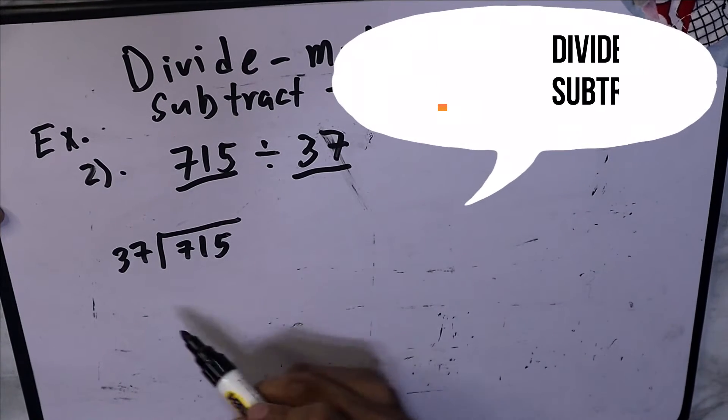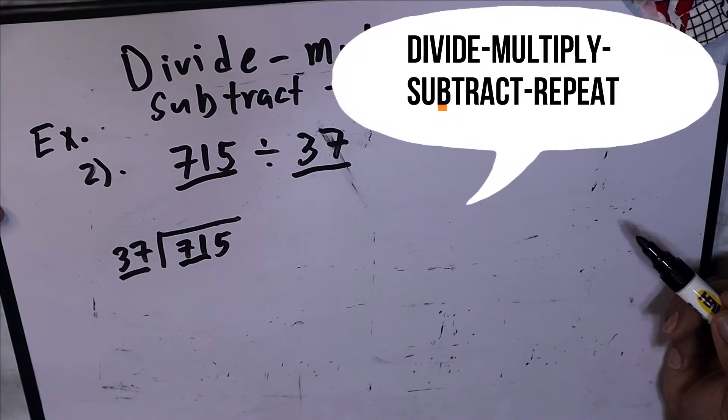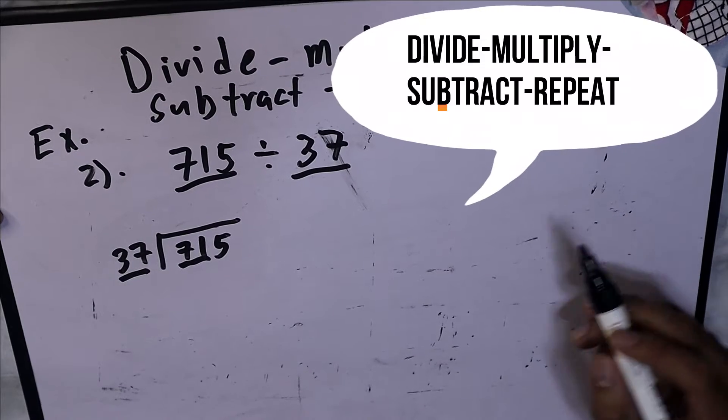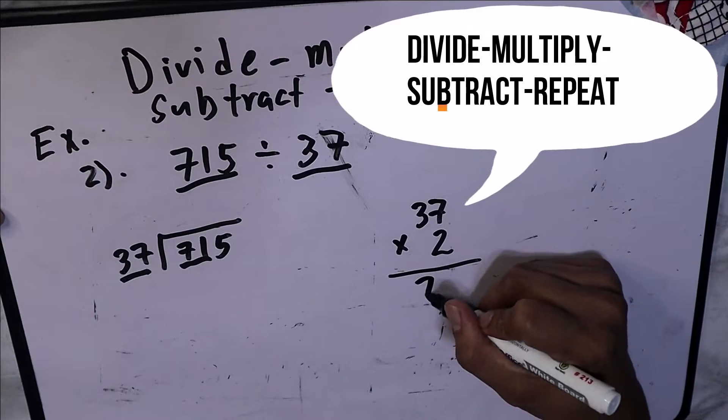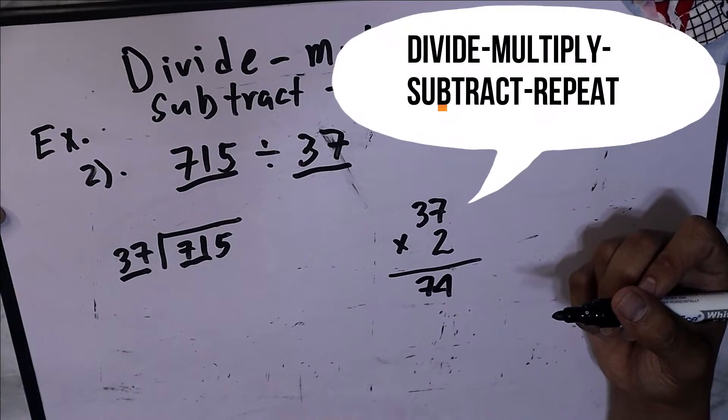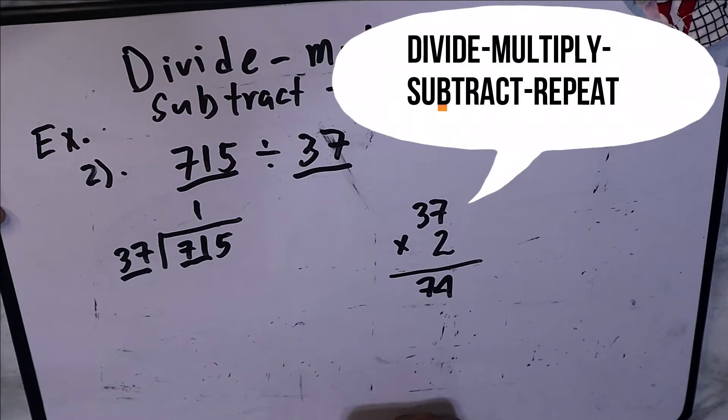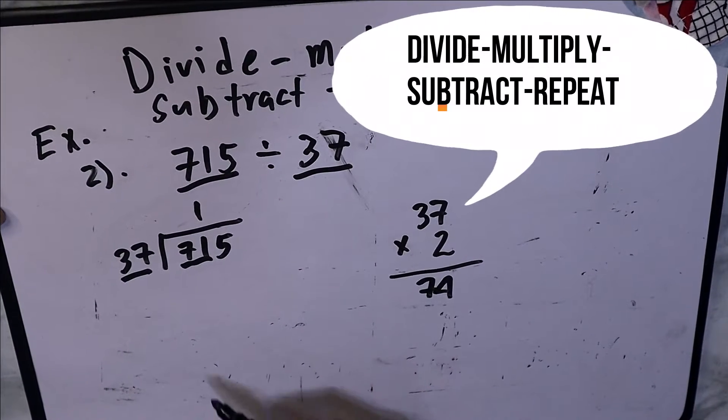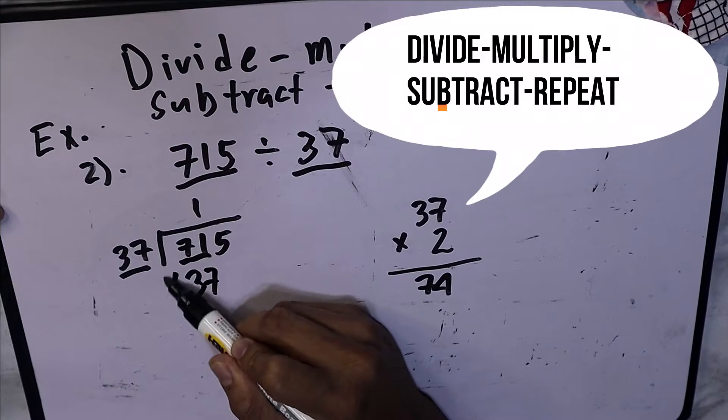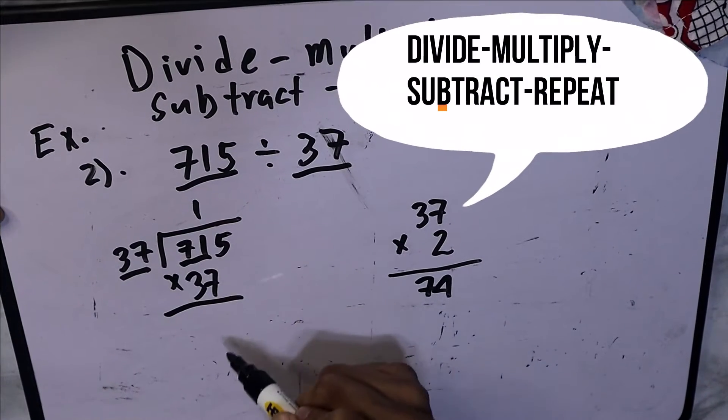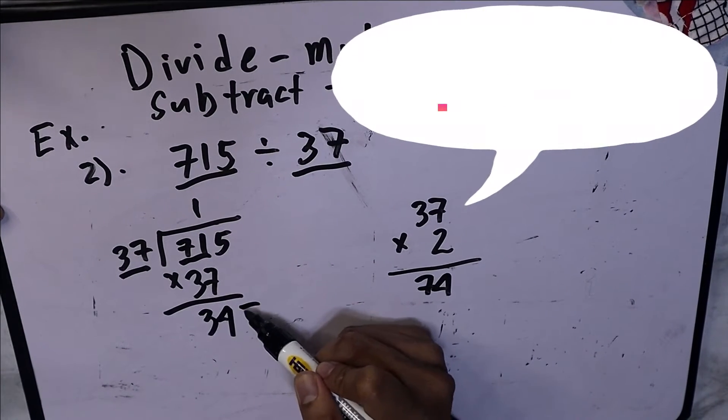Since this is a 2-digit number, we can use the 2-digit number in the dividend to estimate how many 37 in 71. Let's see: 37 times 2 will become 74. It's already over from 71, so we will use 1 as our estimate on how many 37 there is in 71. 1 times 37, which is the second process, the answer is 34. And then bring down 5.